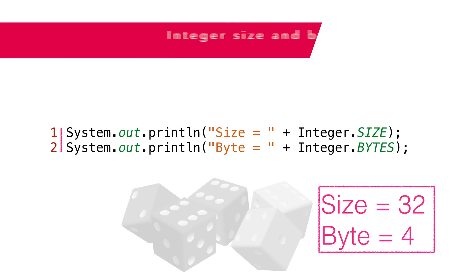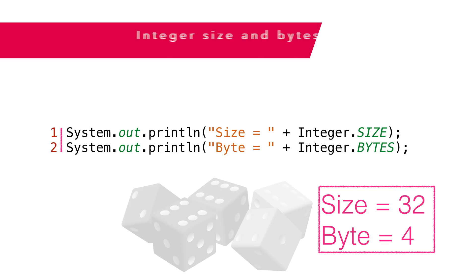The BYTES and SIZE constants tell us how large the data type is. When working with integers, some machines will have a 32-bit number, others a 16-bit number — it depends on the CPU, version of Java, and so on. For most personal computers, BYTES will return 4 and SIZE will return 32 for integers. The Long class would be 8 and 64, respectively.